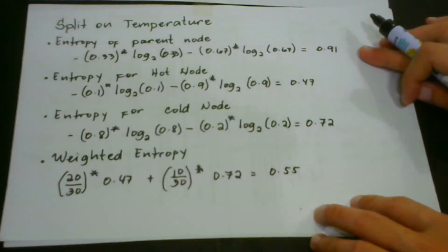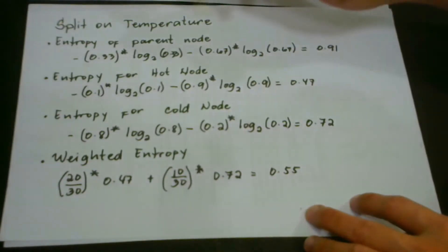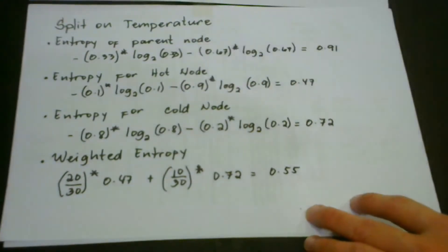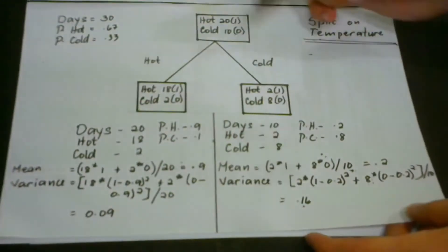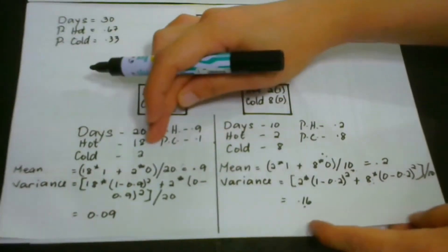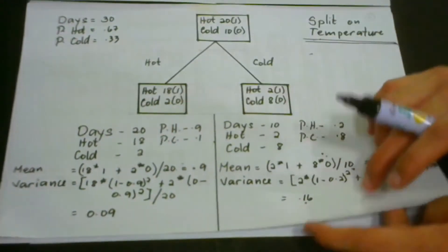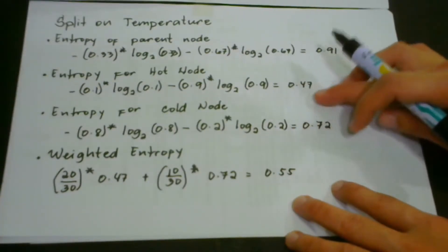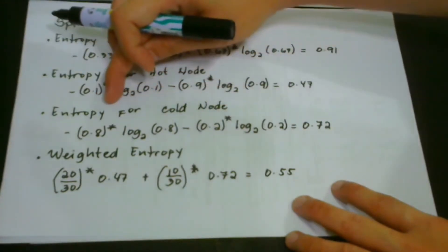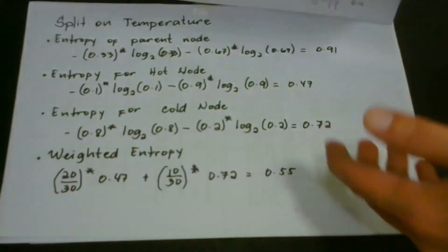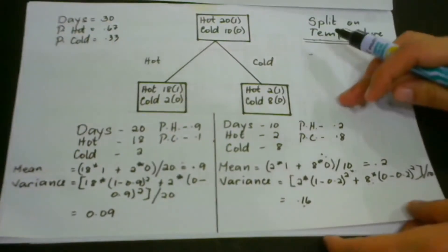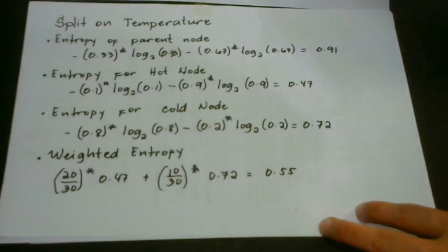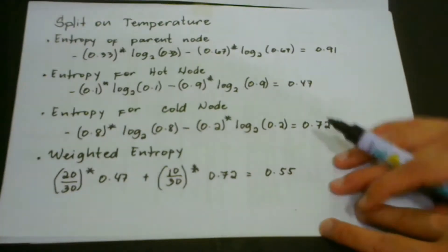Now let's go to the child nodes. For the hot node, we plug these values into our formula and get a result of 0.47. For the entropy of the cold node, we plug in the values 0.2 and 0.8 into our formula and get 0.72.